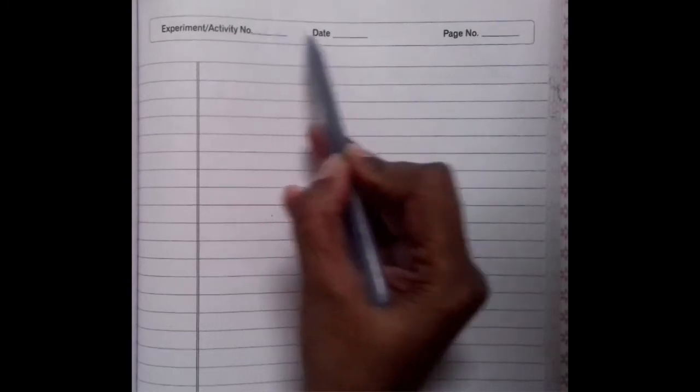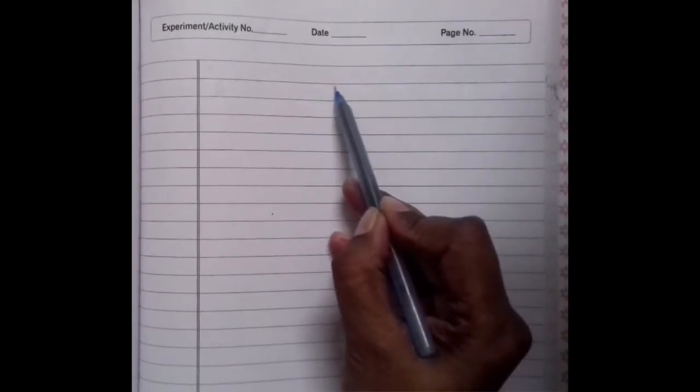Here, you will write experiment number, today's date and page number. And exactly below that, you have to write first the name of the practical.